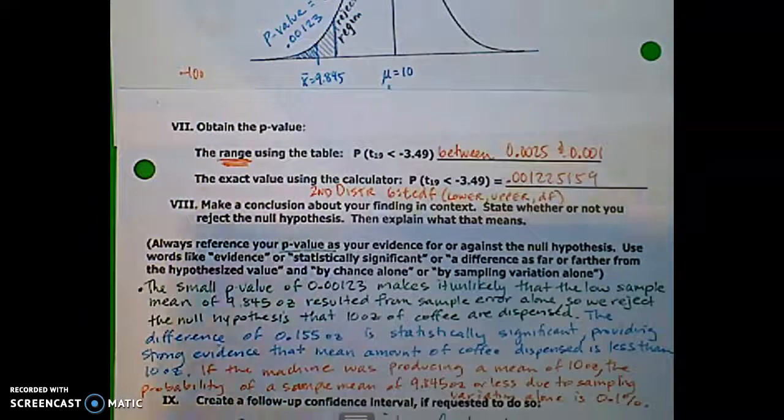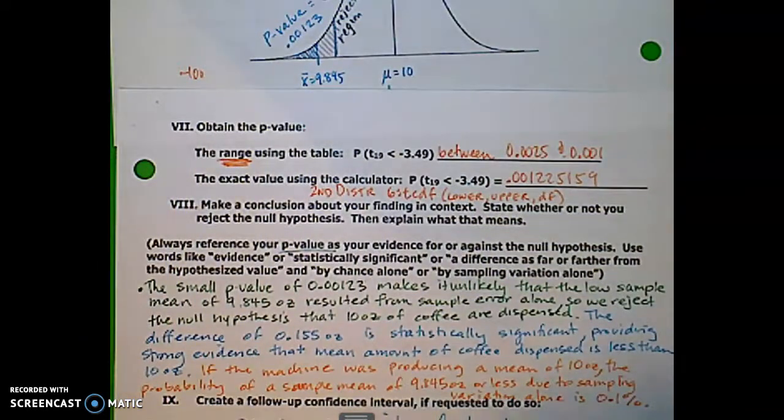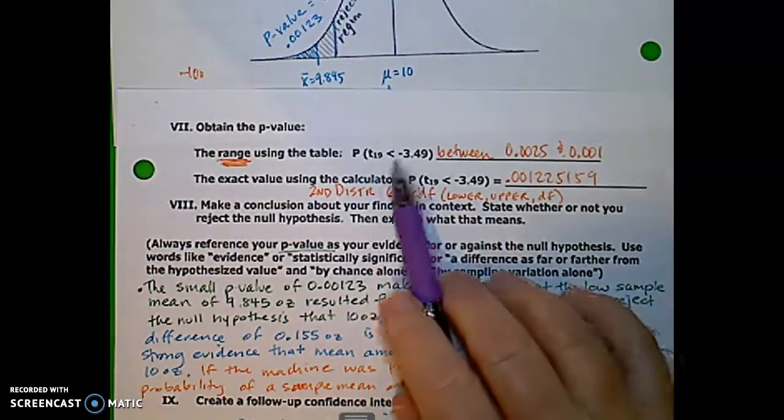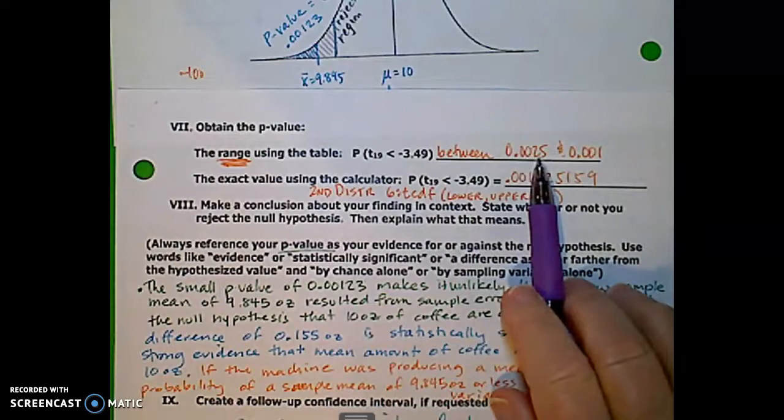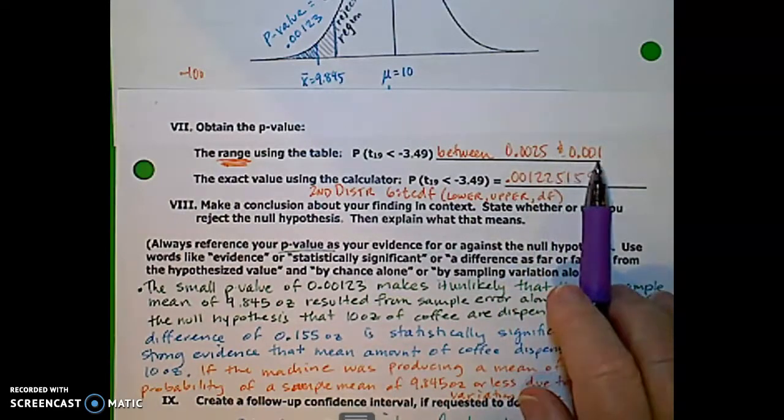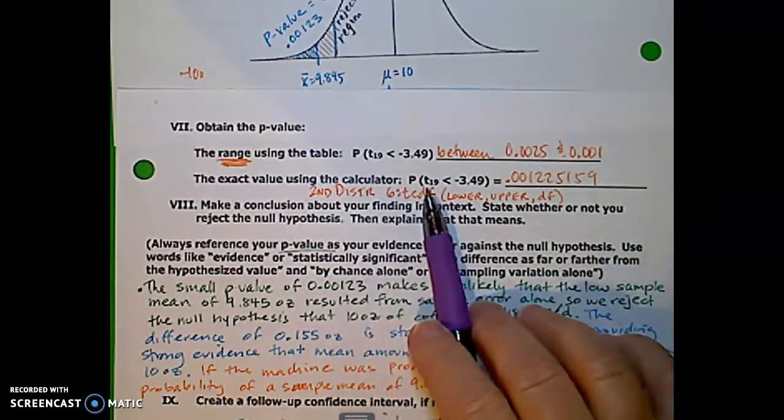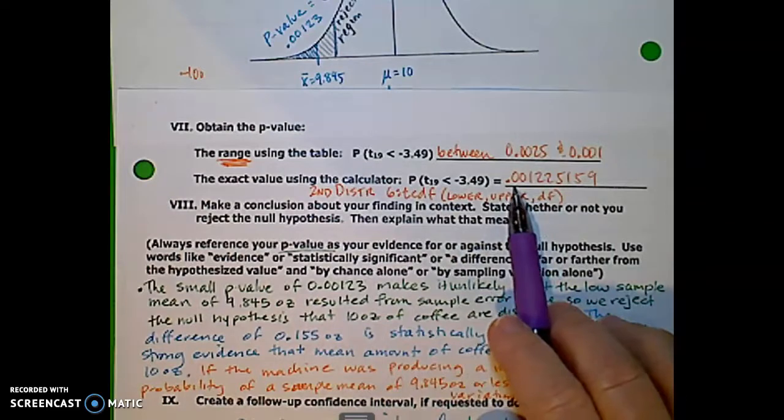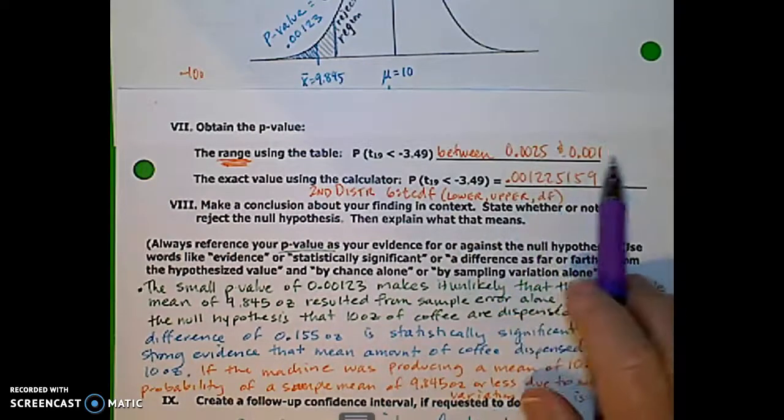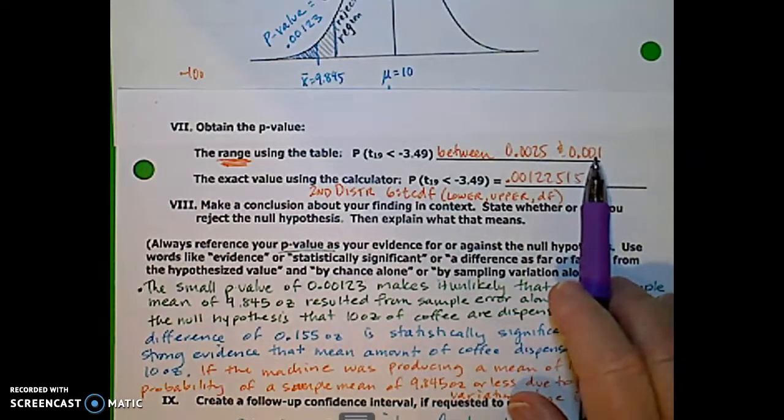So our p-value from the table is between .0025 and .001. The exact value we can get from our calculator. And it turns out to be .00122, so it's much closer to this side, .001.